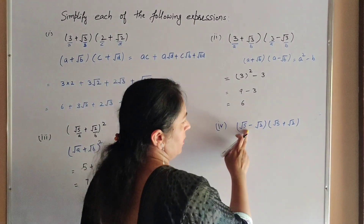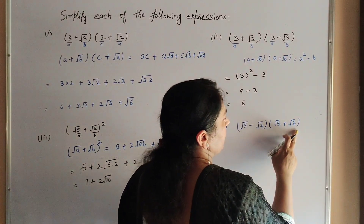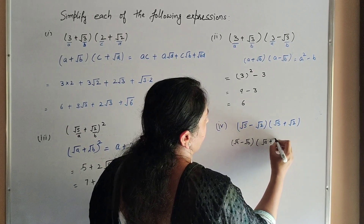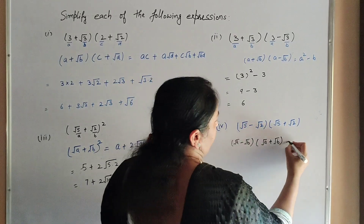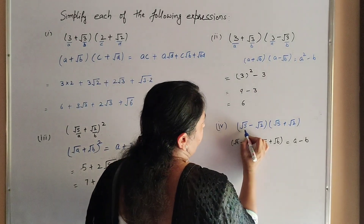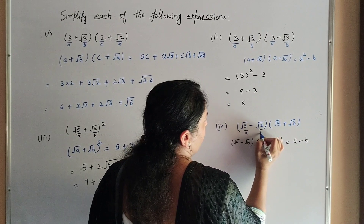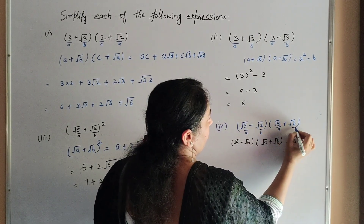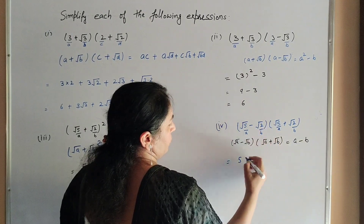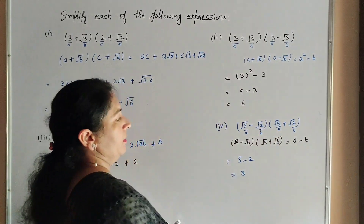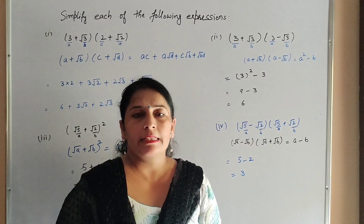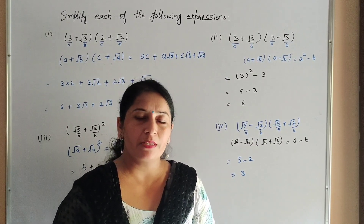Now the next part: (√5 − √2)(√5 + √2). We use the identity (√a − √b)(√a + √b) = a − b. Here a = 5 and b = 2, so the answer is 5 − 2 = 3. This is all about question number 2 of exercise 1.5.